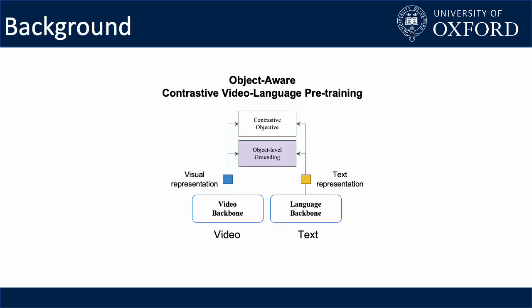In this work, we focus on learning good representations on egocentric videos through vision-language pretraining. One common method of doing it is contrastive learning. Our method adds an object grounding objective to the pipeline and trains the model to learn better representations at a finer grain.